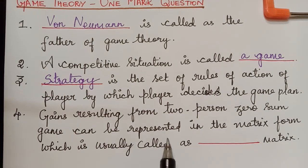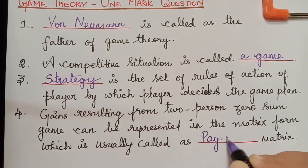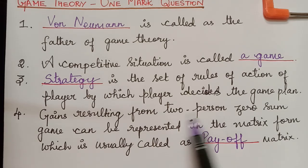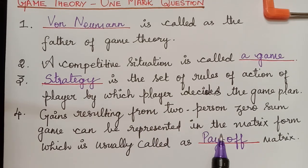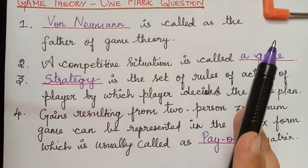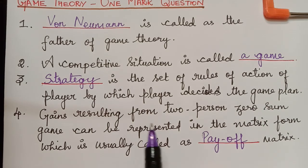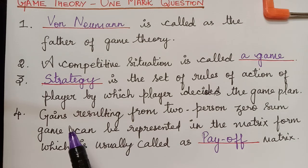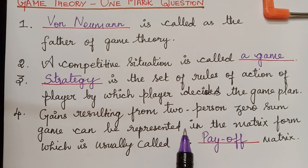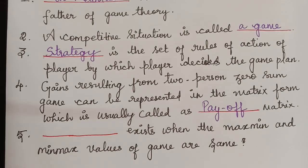The next question is: gains resulting from a two-person zero-sum game can be represented in matrix form, which is usually called the payoff matrix. Every game must result in an output which will be a profit or loss, and that output is represented in the form of a matrix known as the payoff matrix.